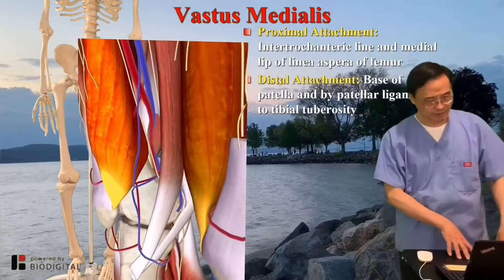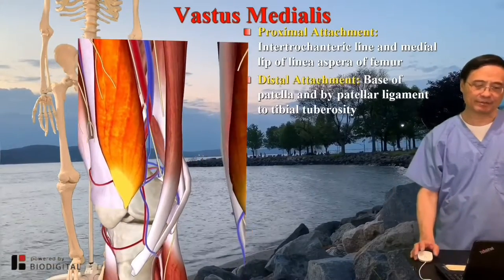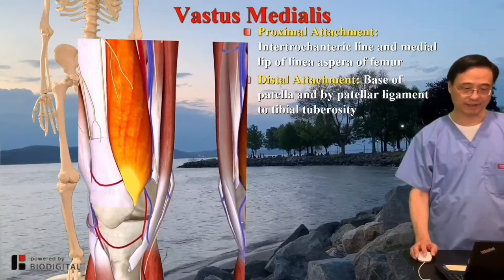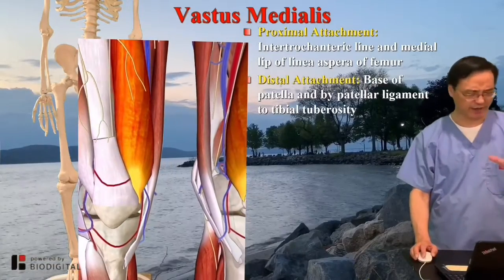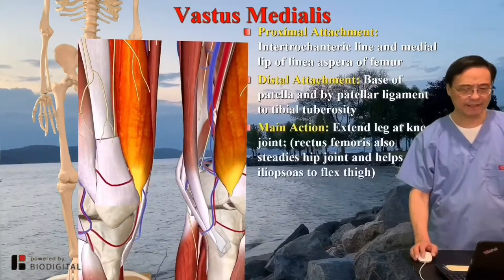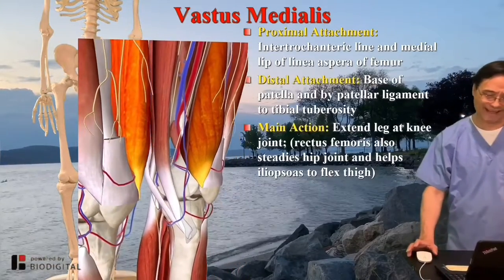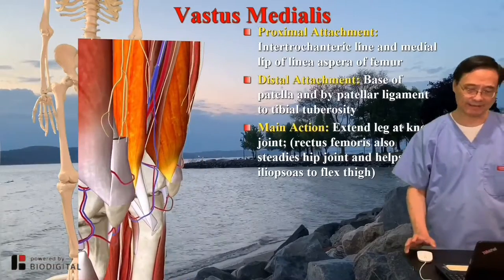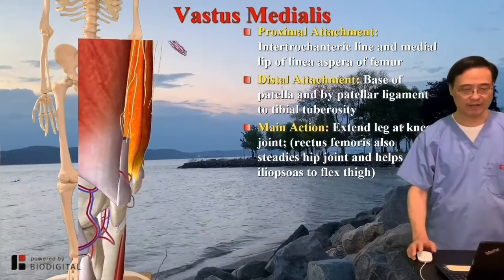The distal attachment is, of course, the base of the patella, by the patellar ligament or patellar tendon to the tibia tuberosity — same thing. The knee action: this muscle extends the leg at the knee joint.